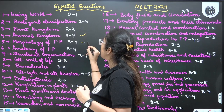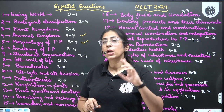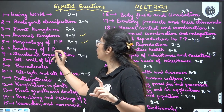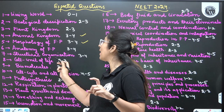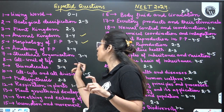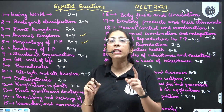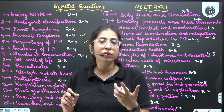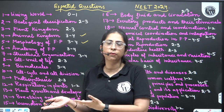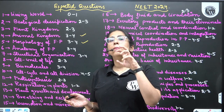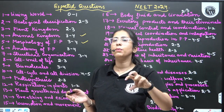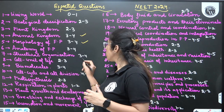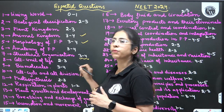Morphology of Flowering Plants: 3 to 4 questions — please do not skip this. Animal Kingdom, Morphology of Flowering Plants, Anatomy of Flowering Plants, and Structure Organization of Animals are all important. The frog and cockroach topics are newly added, so a lot of questions can be asked from these topics. Tissues are also newly added, so I can say 3 to 4 questions can be expected.